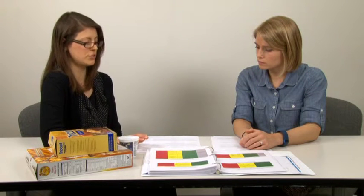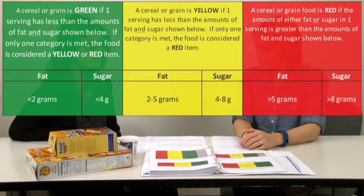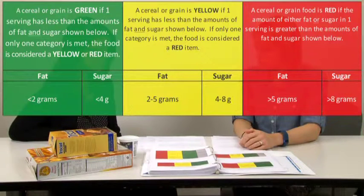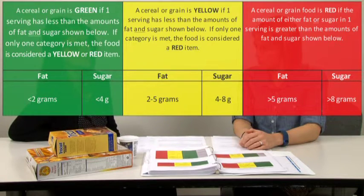What other foods might have a lot of added sugars? I will give you a hint. We often eat them at breakfast. Cereals? Exactly. Cereals and grains are another item that we need to take sugar content into account. So in general if a cereal or grain has less than two grams of fat and less than four grams of sugar it is a green. Yellows have between two and five grams of fat and four and eight grams of sugar per serving. Reds have greater than five grams of fat and more than eight grams of sugar per serving.